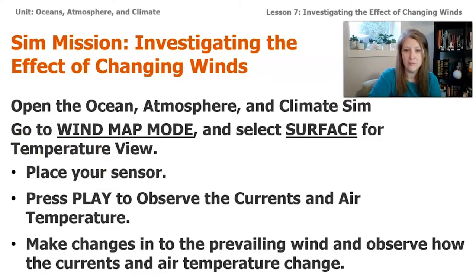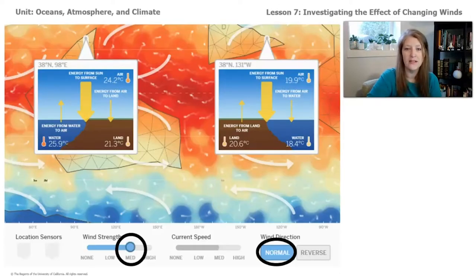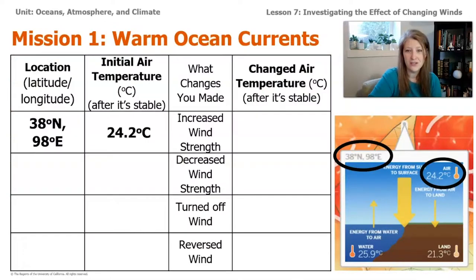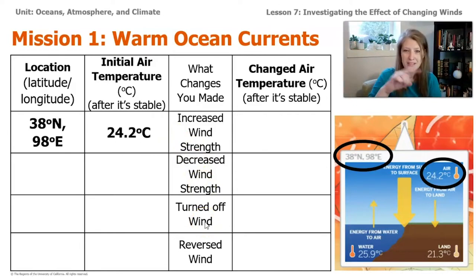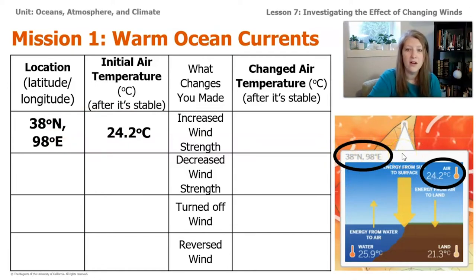This is what the sim will look like when you're ready to start. You can see that the wind strength is set to medium and the wind direction is normal. Some of the things you can try: increase the wind speed, decrease the wind speed, try turning the wind off completely, and reverse the wind to see what happens. In your data table, record the location — found in the top left corner of the sensor box — and the air temperature, found in the top right corner.